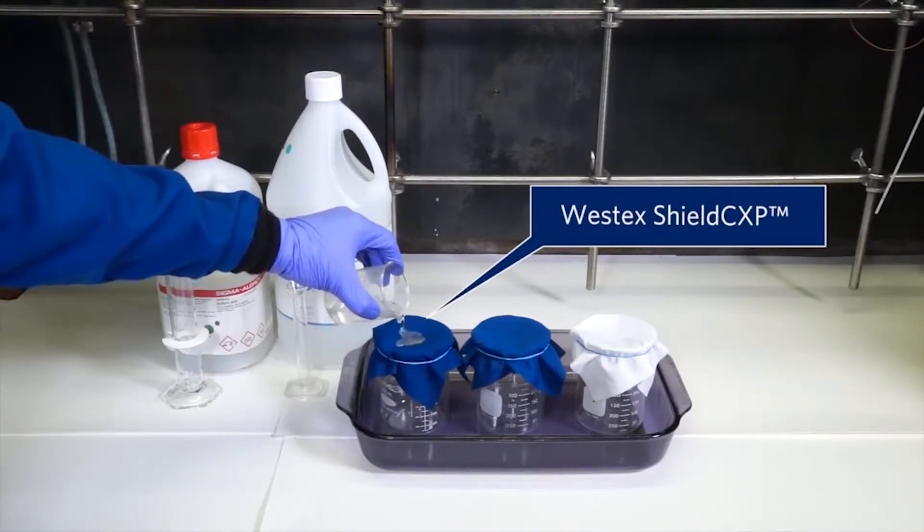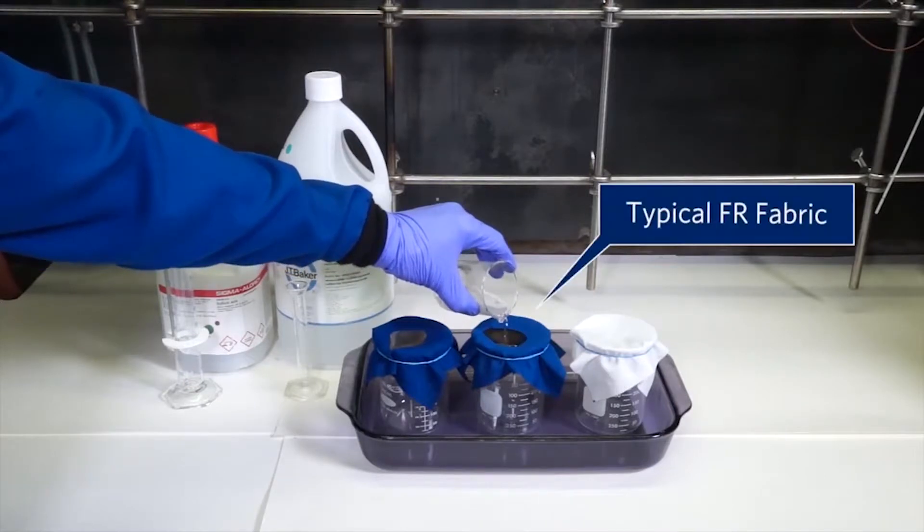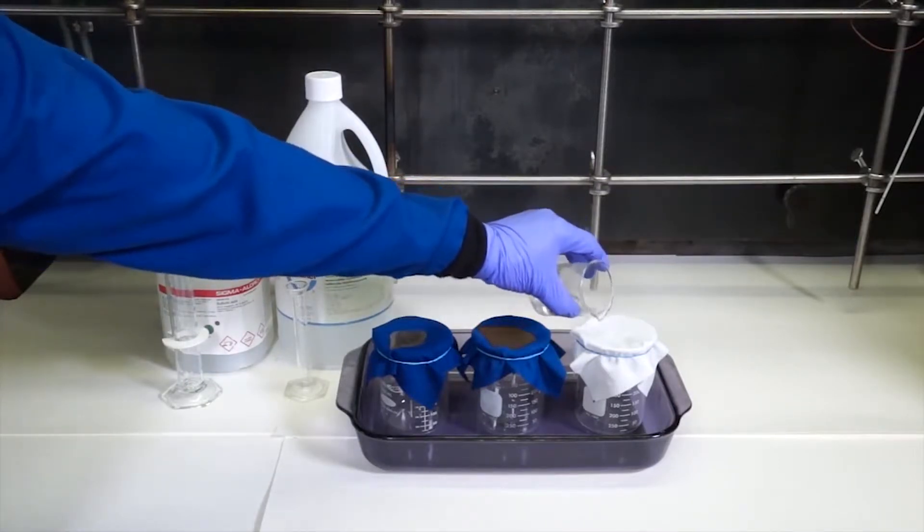See how this commonly used solution of sulfuric acid and hydrogen peroxide pools on the surface of Shield CXP while it quickly eats through a FR lab coat fabric.